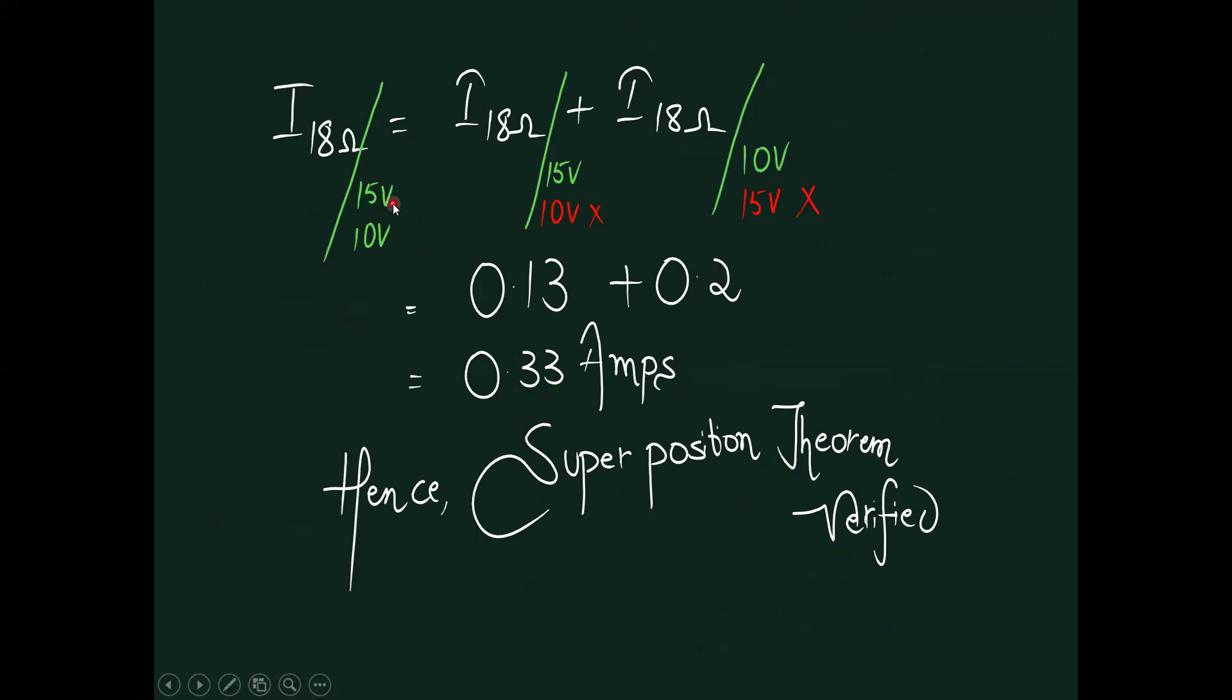Finally, we observe one thing. When both the sources are acting, I know the value is 0.33. But with individual sources, that is only 15 volts is in active mode, 10 volts is inoperative—we short circuit the 10 volt side. In a similar fashion, 10 volts is in active mode, 15 volts is in non-operative mode. We get these two values. Just algebraic summation, I add these two things, we get the value of 0.33 amperes. Hence, we can verify superposition theorem. Same thing, we want to go for the practical session.